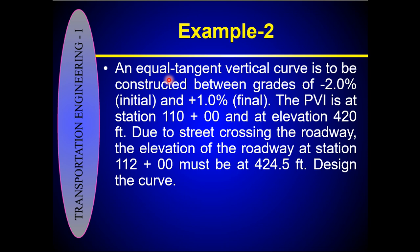The given data: equal tangent vertical curve; G1 = minus 2%, which is the initial roadway grade (also denoted as small b); G2 = 1%, the final roadway grade. The stationing of the PVI is 1110 and the elevation of the PVI is 420 feet. The elevation of the roadway at station 1112 is 424.5 feet, and you have to design the curve.